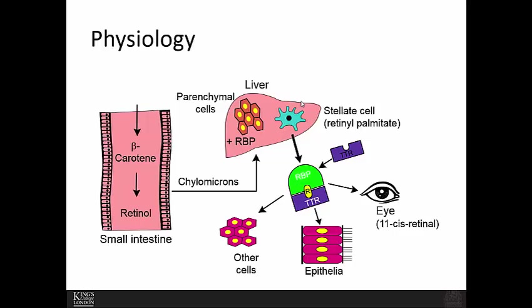Looking at the physiology: because vitamin A is a fat-soluble vitamin, it is absorbed through the same mechanisms by which dietary fat and sterols are absorbed. In the intestine it is broken down, some conversion takes place, and once absorbed it travels with the chylomicron through circulation and eventually returns to the liver.